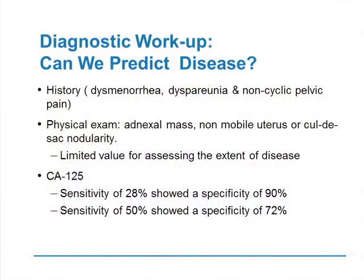At physical examination, if you find an adnexal mass, a non-mobile uterus, or cul-de-sac nodularity, you will in high probability — especially in a young woman — have endometriosis. However, it has limited value for assessing the extent of disease. Ordering a CA-125 does not predict endometriosis: sensitivity is quite poor, and if you try to increase sensitivity, specificity decreases dramatically. There is really no role for CA-125 in investigating patients with these symptoms.